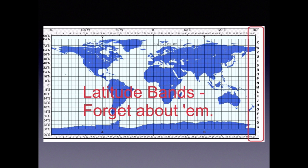There is one additional aspect to a complete UTM coordinate, and that is the latitude band. This is a letter designation which tells you if the coordinate is in the northern or southern hemisphere. You hopefully know what hemisphere you're in already, so most users can pretty much ignore latitude bands. But technically it's part of a complete UTM coordinate, and you will see it on some GPS readouts, so it's worth mentioning.